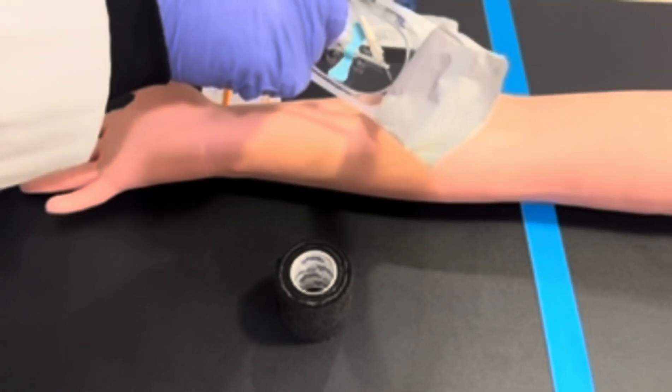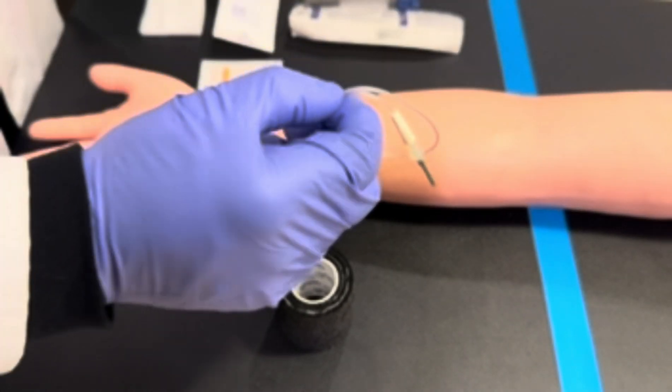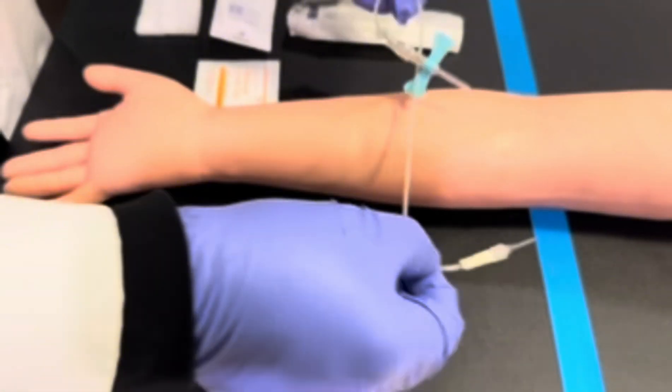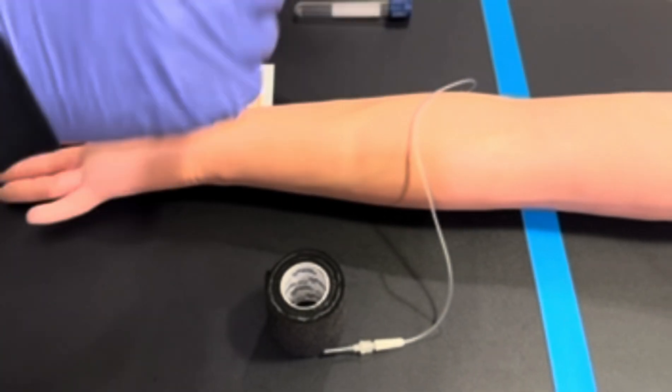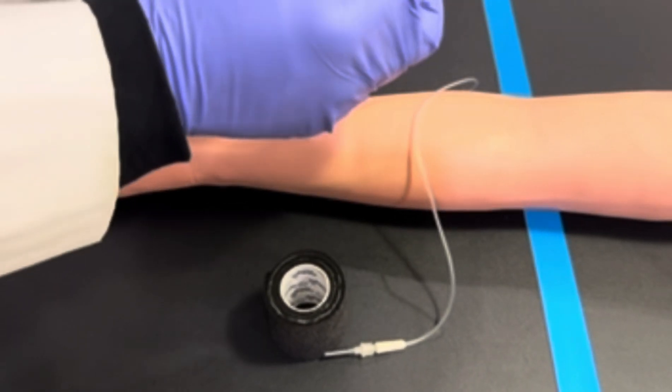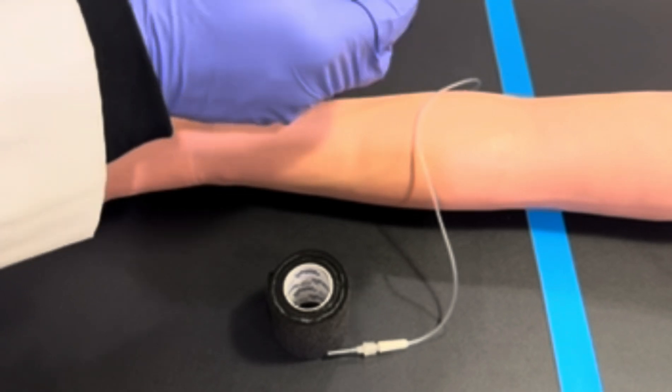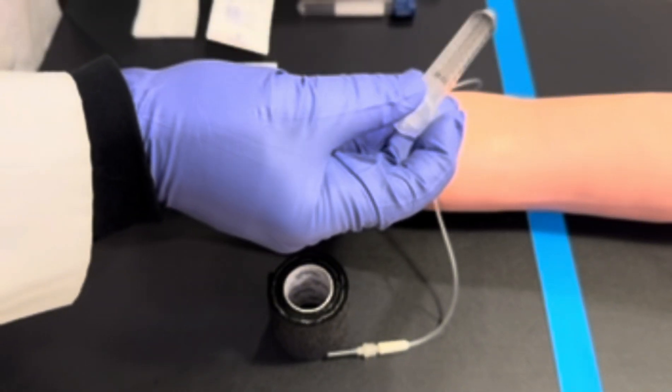We're going to use a 23-gauge butterfly for this procedure. When you're utilizing a syringe method, first you have to assemble the butterfly needle and connect it to the syringe.